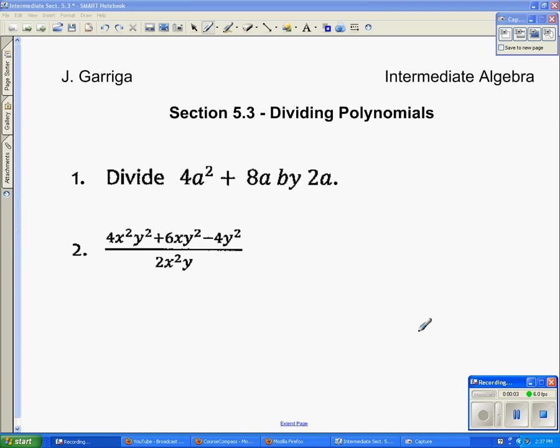Section 5-3 is dividing polynomials. When you divide any polynomial by a monomial, you simply divide each term by that.